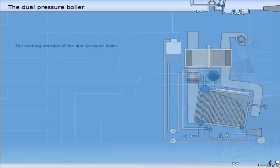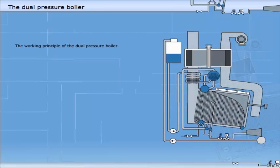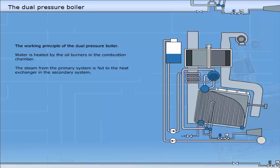The working principle of the dual pressure boiler: In the primary system, water is heated by the oil burners in the combustion chamber. The steam from the primary system is fed to the heat exchanger in the secondary system.